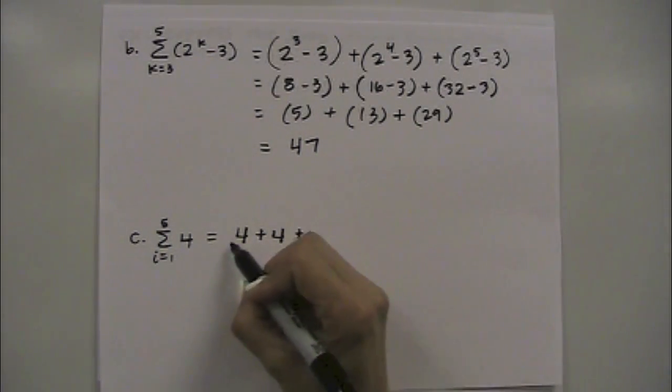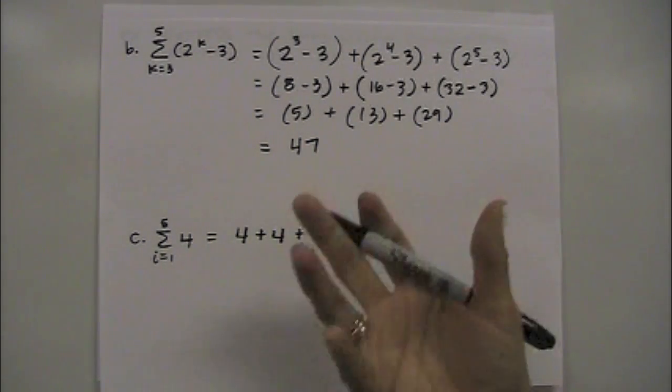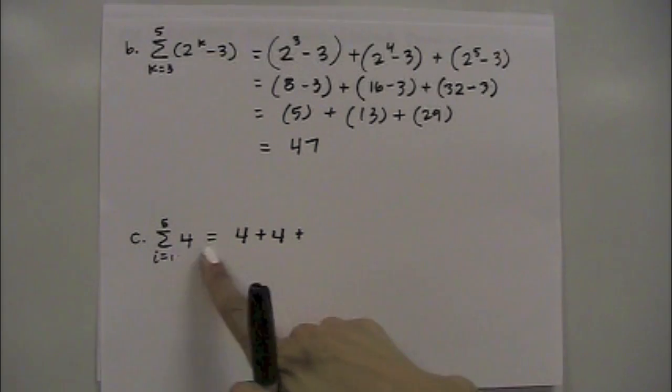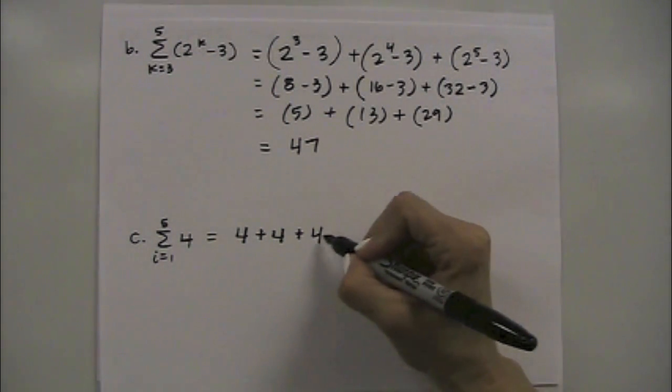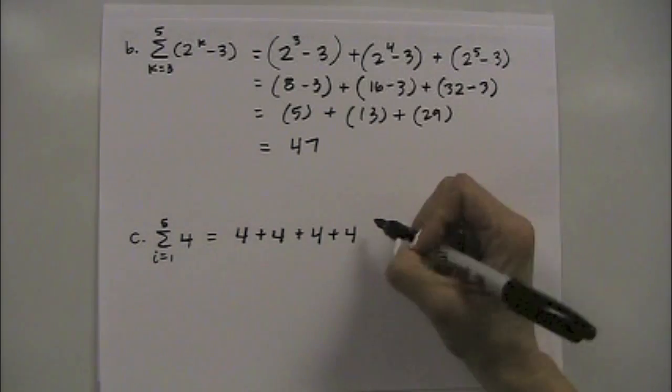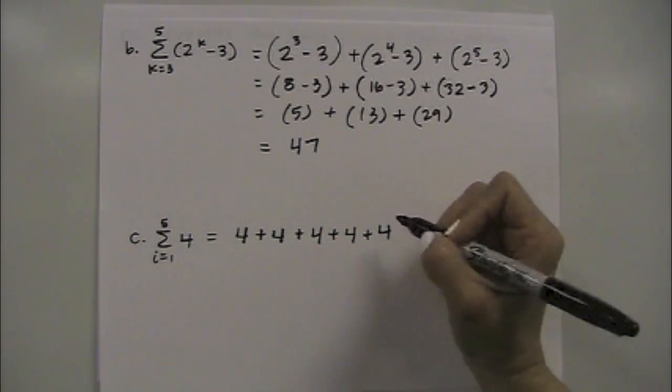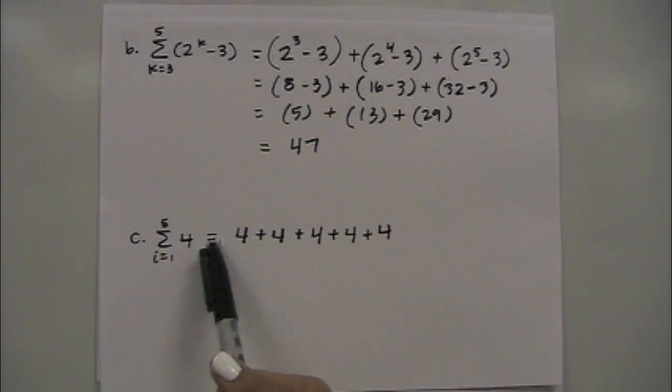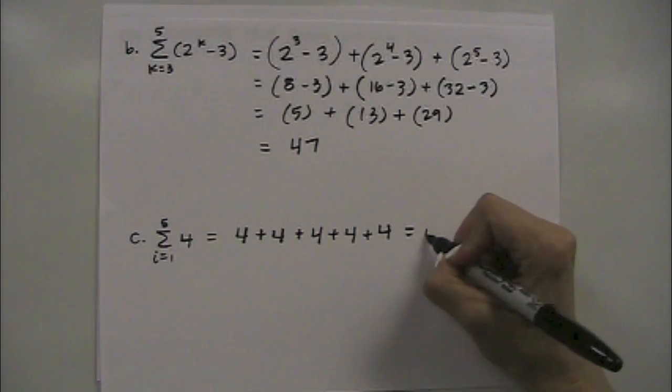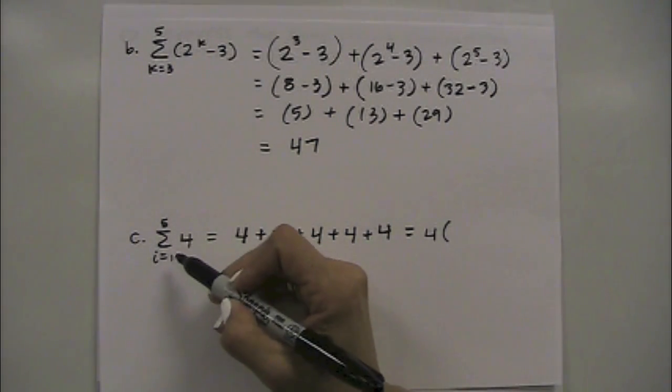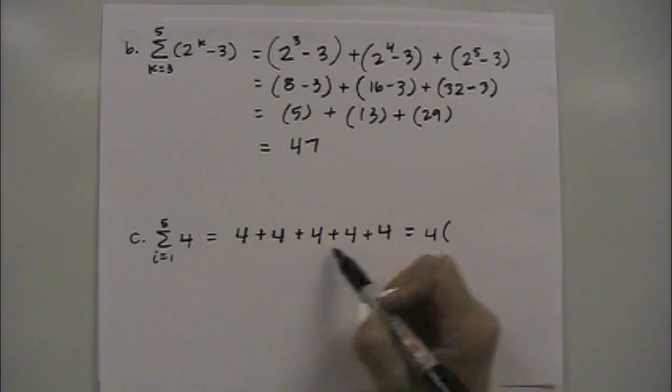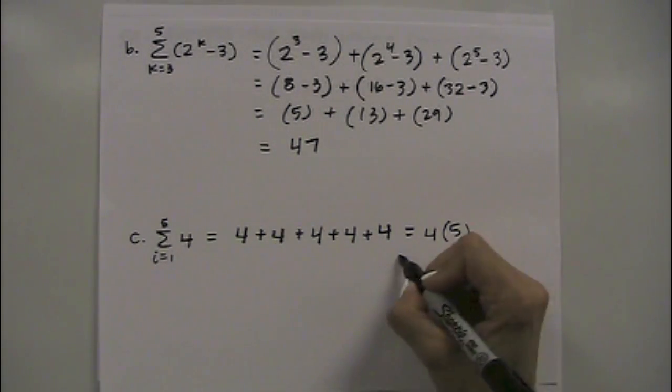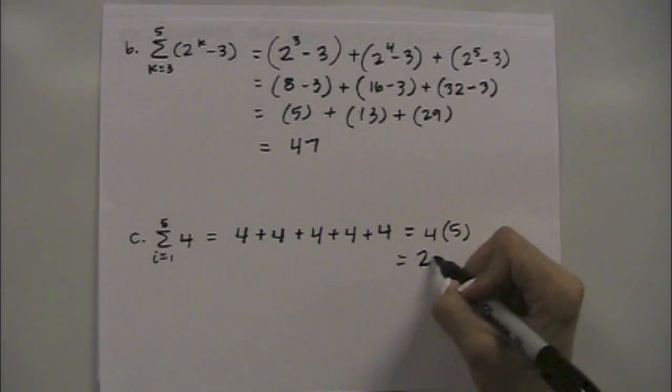So, you're just getting 4 each time when you're plugging in. I mean again there's nowhere to plug into, but this would be your a sub 1, your a sub 2, a sub 3, a sub 4, and a sub 5. Anytime you have a constant, it's just going to be equal to the constant times the number of terms. In this case, because you're starting at 1 and stopping at 5, that's going to be 5 terms, or just the value 20.